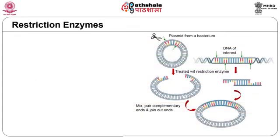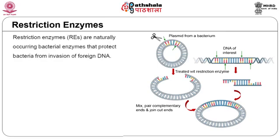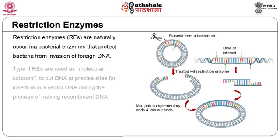Restriction enzymes are one of the essential tools of genetic engineering, which are used to make recombinant DNA. Purified forms of these naturally occurring bacterial enzymes are used as molecular scissors, allowing genetic engineers to cut up DNA at precise sites. Restriction enzymes are used to cut DNA molecules at specific recognition sequences of 4 to 8 base pairs, which are palindromic — that is, they have the same sequence in an opposite orientation on the two strands.